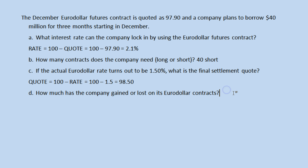And how much has the company gained or lost on its Euro-dollar contracts? We need a couple of additional pieces of information. One key definition: a basis point. One basis point is equal to 0.01 percent. The Euro-dollar futures contract is set up so that one basis point represents $25. So one basis point always equals 0.01 percent, and in the specific case of a Euro-dollar futures contract, that is equivalent to $25.